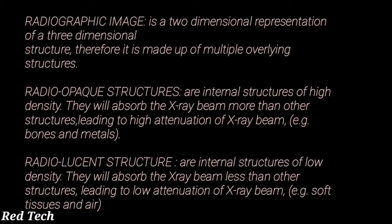The next term is radio opaque structure. Opaque means to prohibit. Radio opaque structures are internal structures with high density — they absorb the x-ray beam more than other structures, leading to high attenuation of the x-ray beam. Opaque means it prohibits the x-ray beam from passing through it.